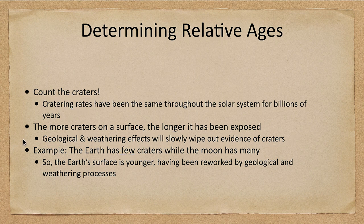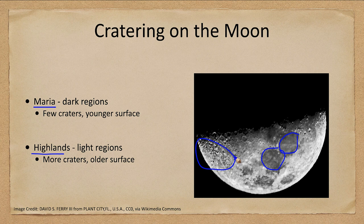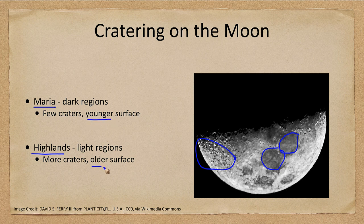Now let's take a look at the moon, because even on the moon we can see two different regions. We have the Maria, which are the dark regions with very few craters — we can see several of those large basins with very few craters in them. We see the highlands, which are the lighter colored regions, and those have a lot of craters. The Maria are younger regions because they have very few craters. The highlands are older, and once we can calibrate this we can use crater density to figure out ages even in the outer solar system.